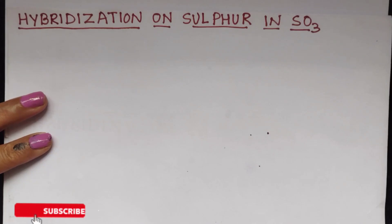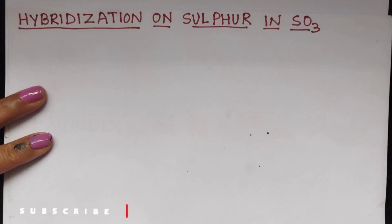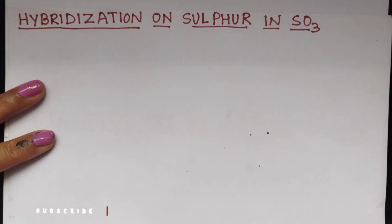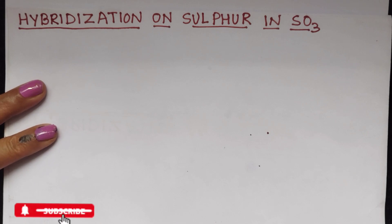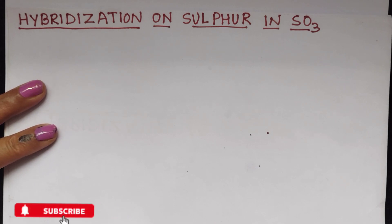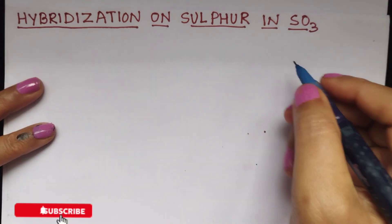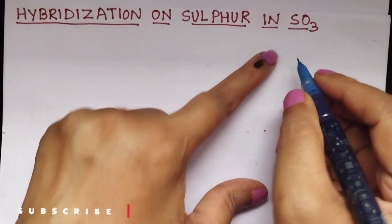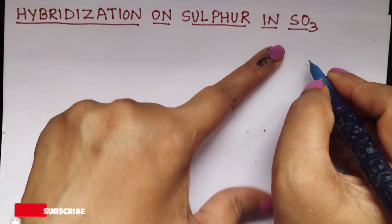Hello students. In today's video, we will see the hybridization on sulfur in the SO3 molecule. Before going for hybridization, let us draw the rough structure of the SO3 molecule.